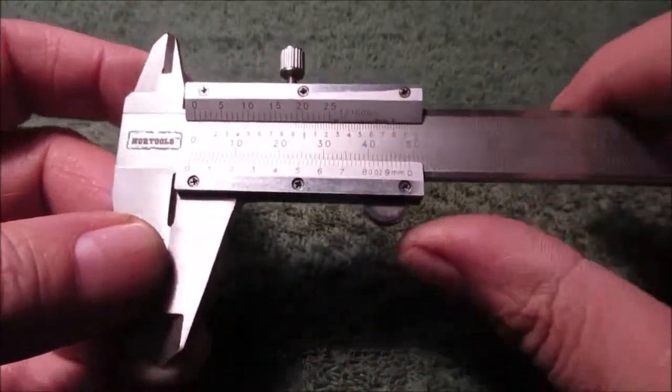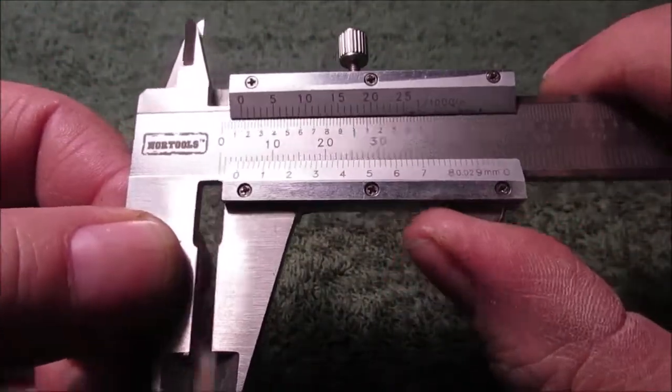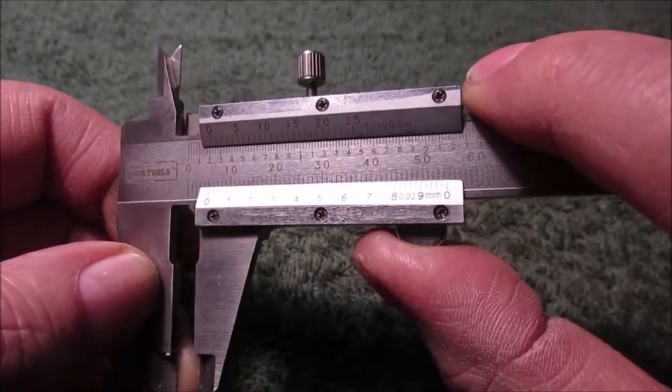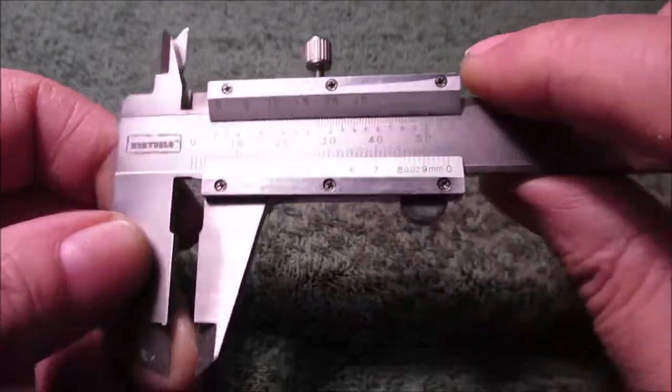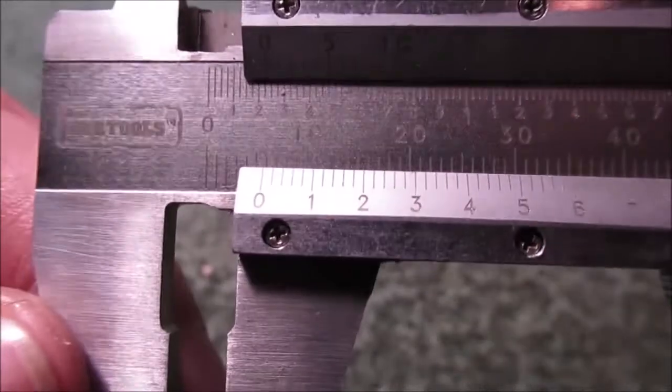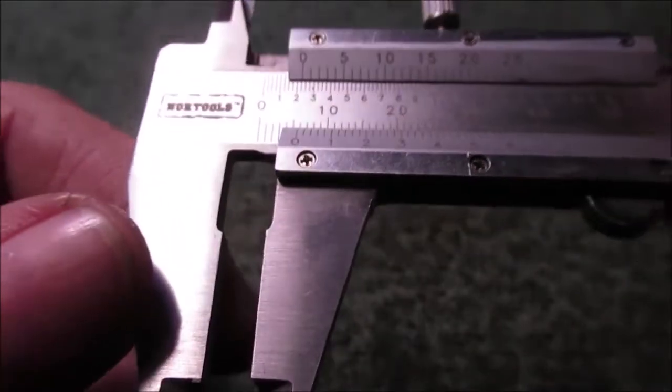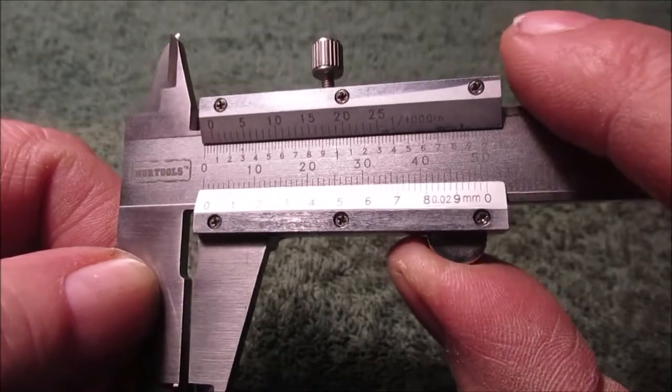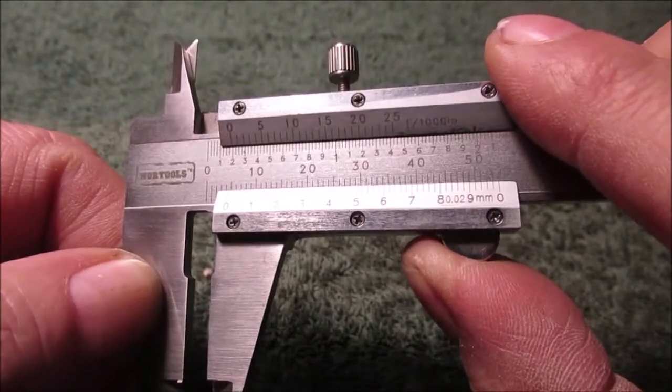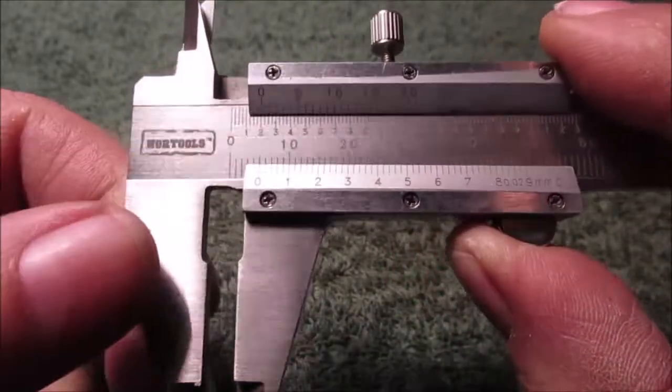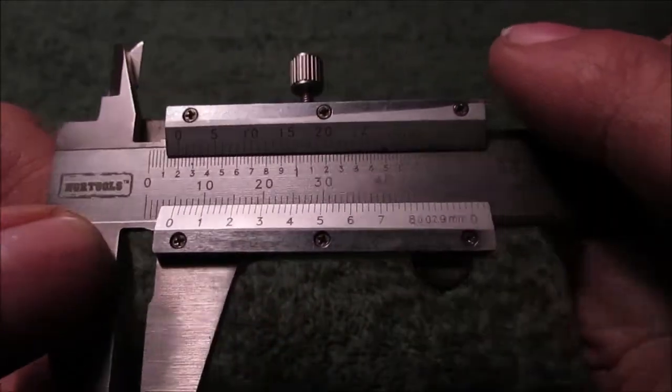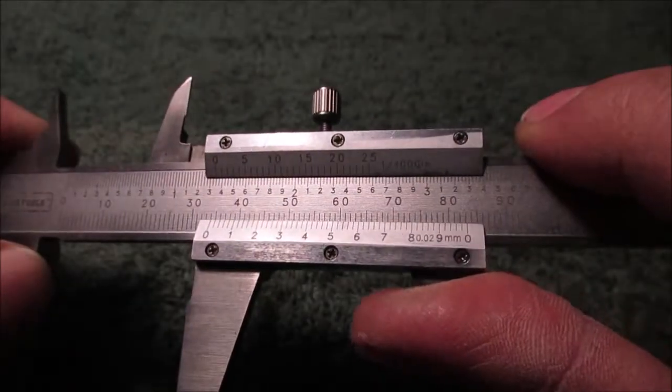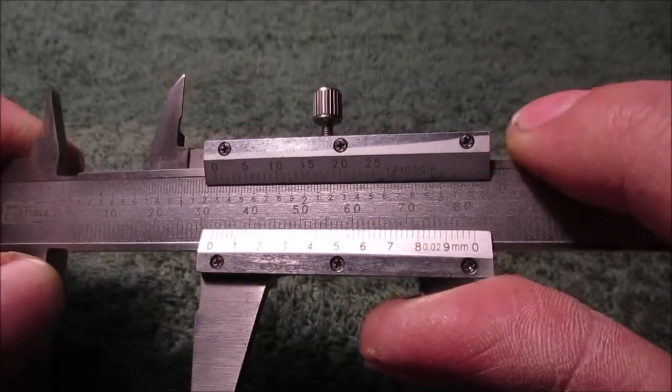I need something to measure metric with. I have no metric measuring tools, so I grabbed a metric bolt or something. Say it's 6 millimeter, I'm going to be able to measure it. All these marks are one millimeter: 10 millimeter, 20, 30. Say it's 33 millimeters.